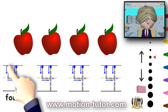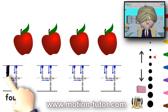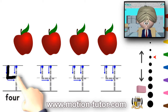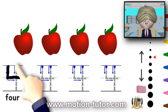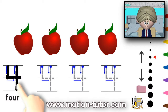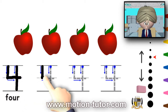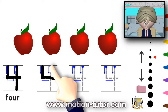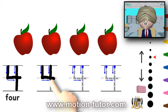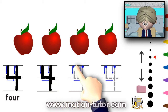And this is how you write the number four. You go down, you go over, and then you come across like that. Down, over, and then you cross that one that went over.